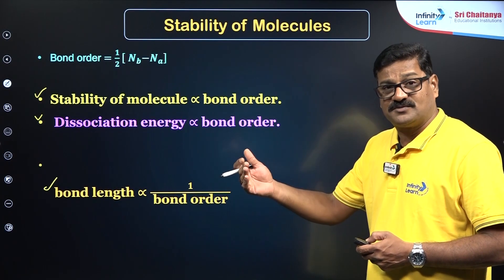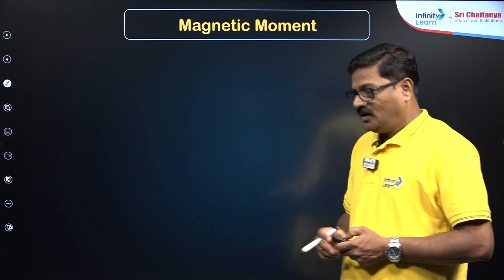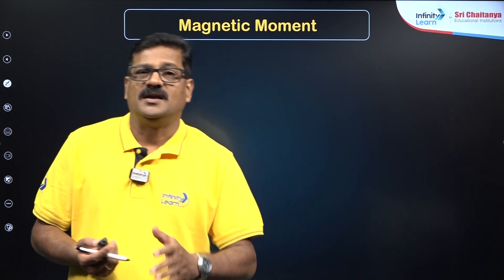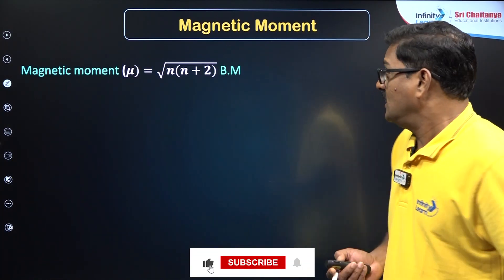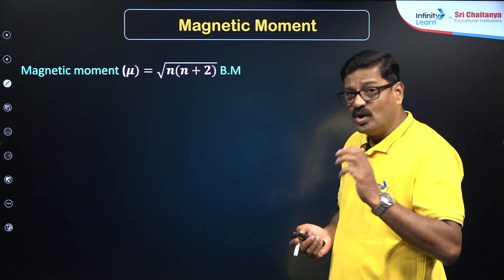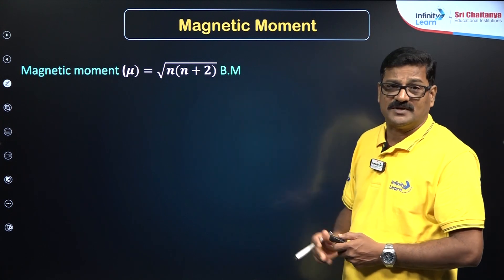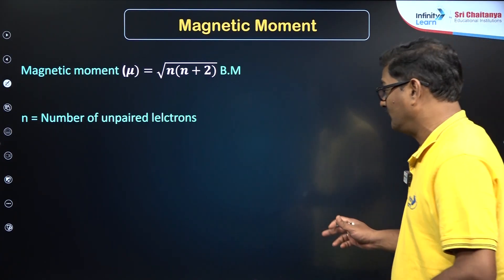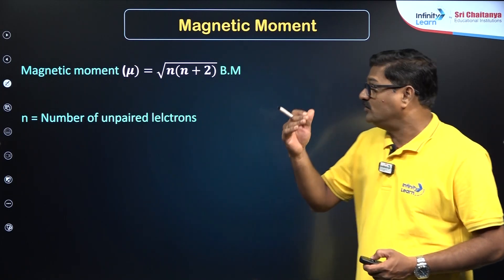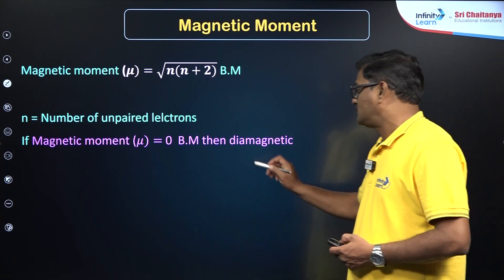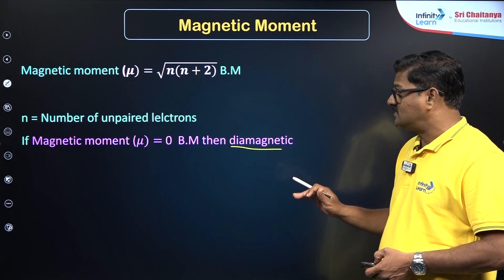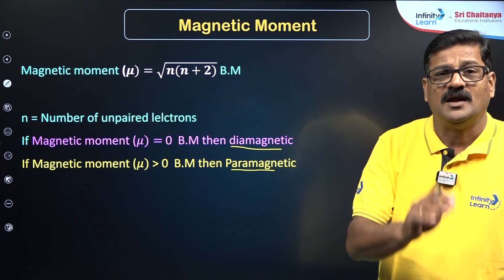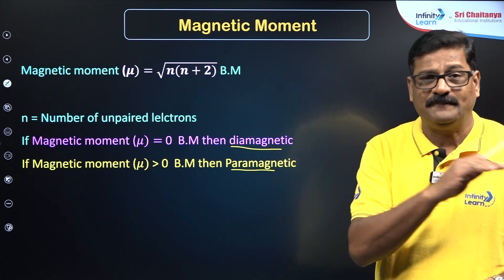Molecular orbital theory can also explain magnetic properties. If a substance placed in a strong magnetic field is attracted, it is paramagnetic; if there is no attraction, it is diamagnetic. The magnetic moment μ = √(n(n+2)), where n is the number of unpaired electrons in the molecular orbital configuration. If the number of unpaired electrons is zero, μ = 0 and the species is diamagnetic. If μ > 0, the species is paramagnetic.